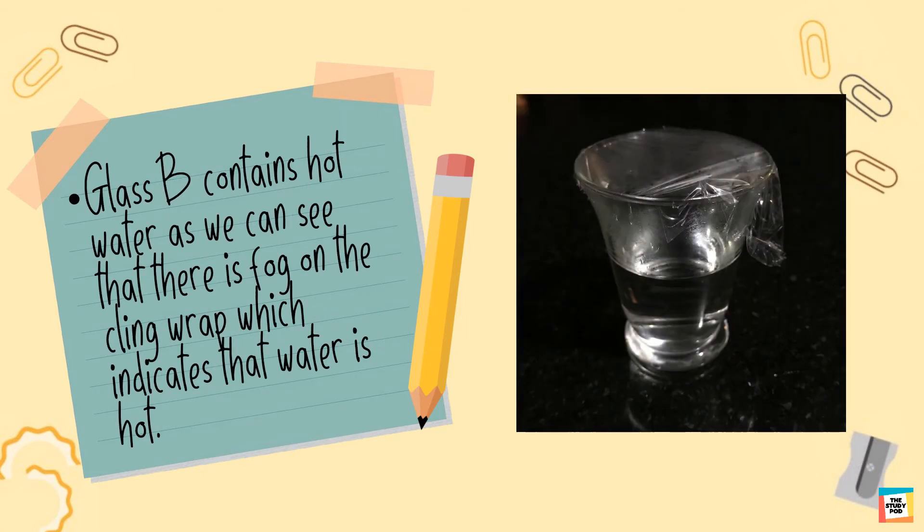Glass B contains hot water, as we can see that there is fog on the cling wrap which indicates that water is hot.